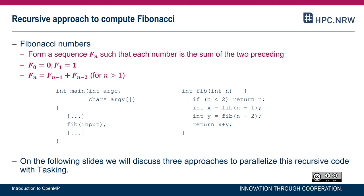In the next slides, I'm going to discuss three different approaches to parallelize such a recursive code, and illustrate the individual advantages and disadvantages with respect to performance. But first, let me add a few things about tasking in OpenMP and the so-called task construct.